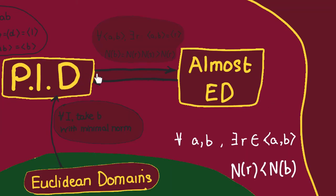Actually, almost Euclidean domains and PIDs are the same thing. If we start with a PID, we can always define some multiplicative function to the natural numbers so that the norm of every non-unit element is bigger than 1. We can then show that norm is almost Euclidean, because in a PID any two elements always have a greatest common divisor, and by multiplicativity of the norm, the norm of the gcd is always less than the norm of B unless B divides A.